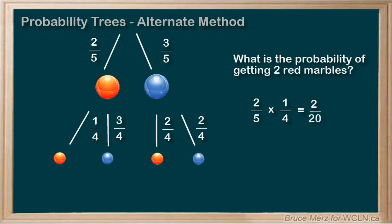And so, our probability is two out of twenty, which we can reduce to one out of ten, or ten percent. And if you remember, that is exactly what we calculated using the original probability tree. So, both methods are correct, but many students find this way a lot easier.